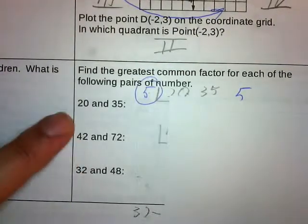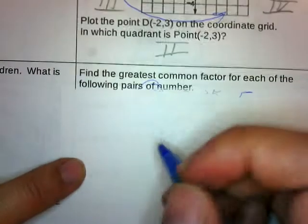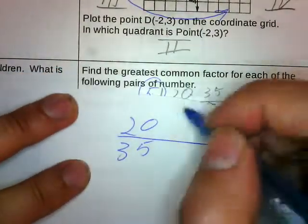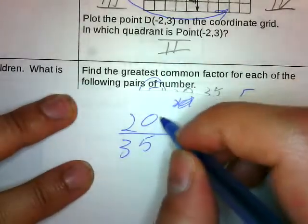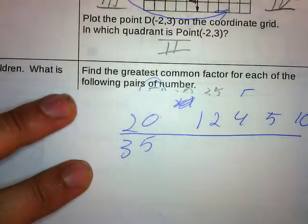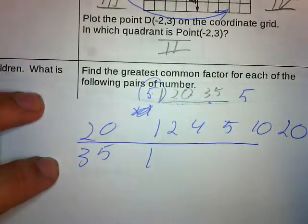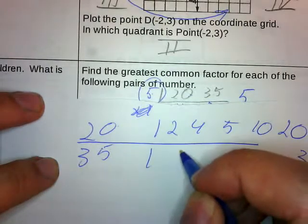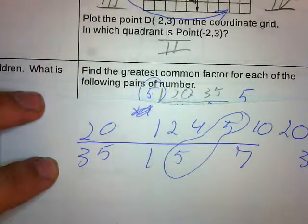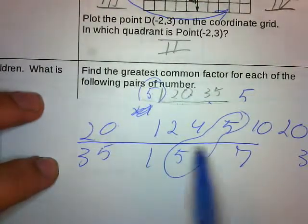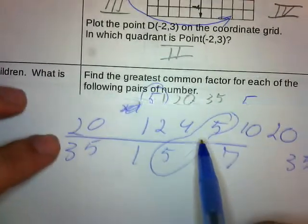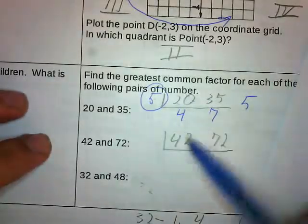The long way to do this problem for 20 and 35 is to list the factors. What times what gives us 20? 1 and 20, 2 and 10, 4 and 5 — there are all the factors of 20. The factors of 35: 1 and 35, 5 and 7. There's your greatest common factor — it's 5. You can also look up the ladder method on YouTube; there are lots of videos. Try these out on your own.